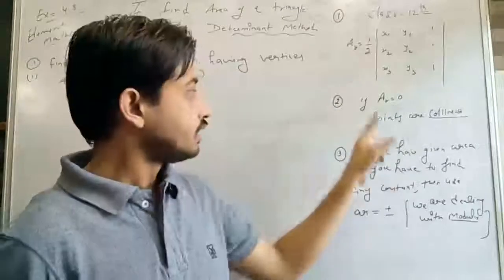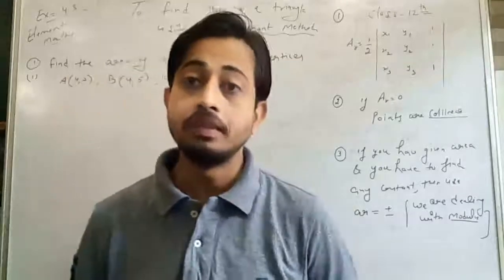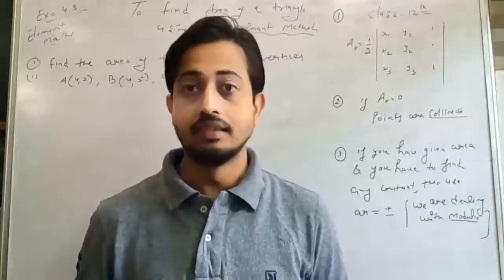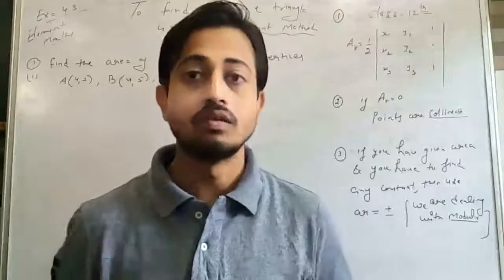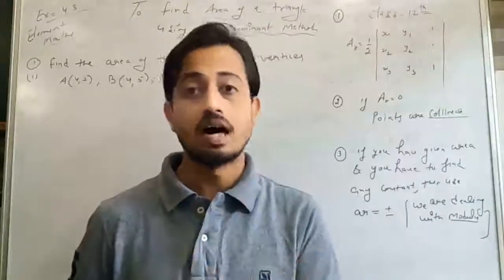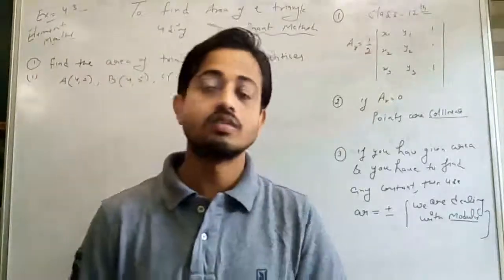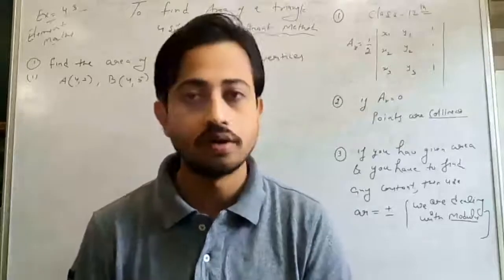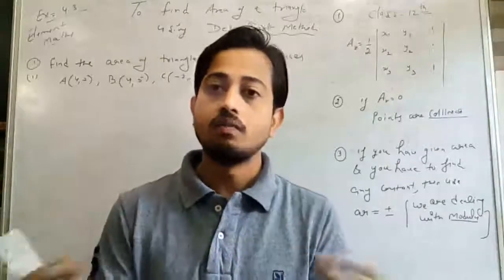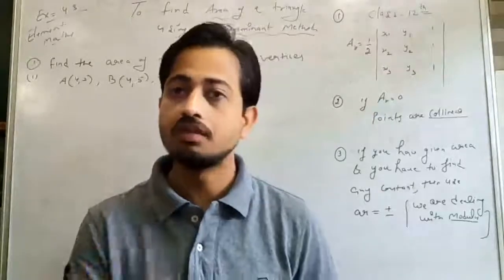The second point is about the area of the triangle. If the area of the triangle is equal to 0, it means the points are not making a triangle. If the points are not making a triangle, it means all the points lie on the same line. That is why we can prove whether points are collinear or not by using the area method.